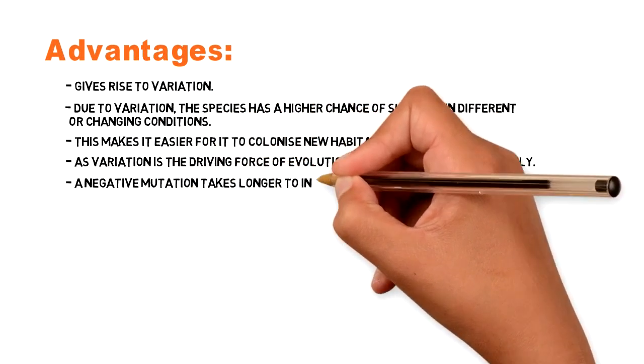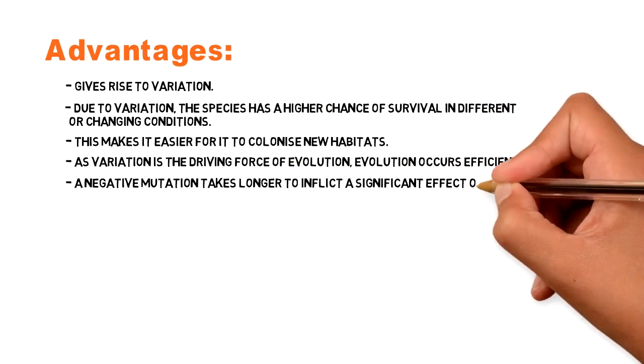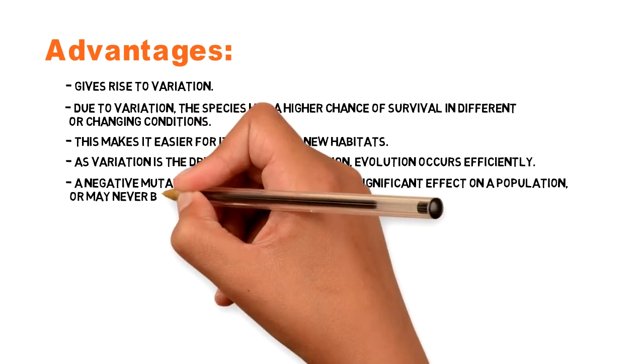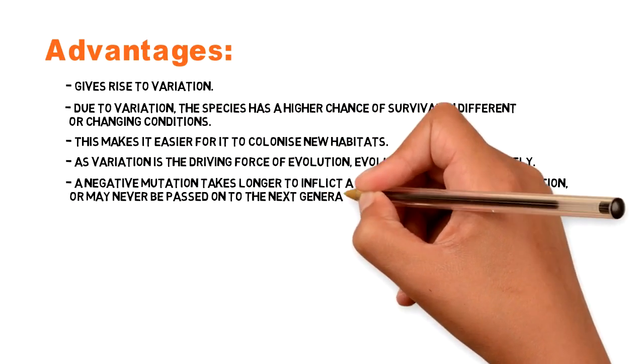A negative mutation takes longer to inflict a significant effect on a population, or may never be passed on to the next generation at all.